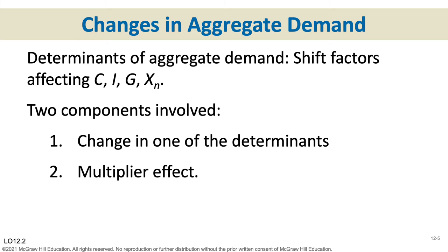When we change spending, remember we have the multiplier effect. The multiplier was based on our marginal propensity to consume — specifically, the multiplier equals one divided by MPS, the marginal propensity to save. So when we shift spending, the multiplier kicks in and causes that curve to shift even further to the right or further to the left.